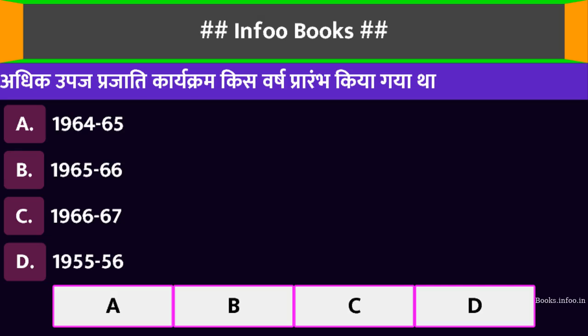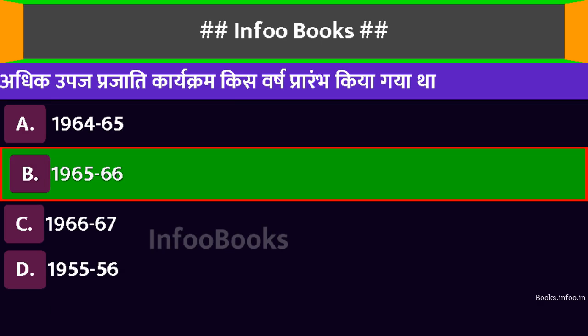अधिक उपज प्रजाति कार्यक्रम किस वर्ष प्रारंभ किया गया था? Option A: 1964-65। Option B: 1965-66। Option C: 1966-67। Option D: 1955-56। सही विकल्प है: 1965-66।